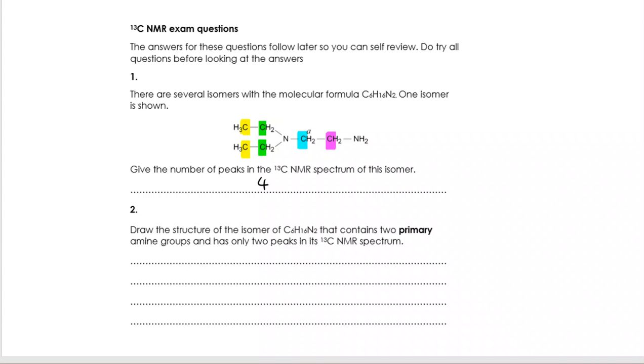For number two, it says draw the structure of the isomer of C6H16N2 that contains two primary amine groups and has only two peaks in its carbon-13 NMR spectra. So primary amine group is an NH2. What we have got here is a C6 ring, NH2's on opposite sides of it. That means I've got two carbons that have an NH2 connected, and all four of these other carbons are now in the same environment. So I've satisfied the criteria for number two.